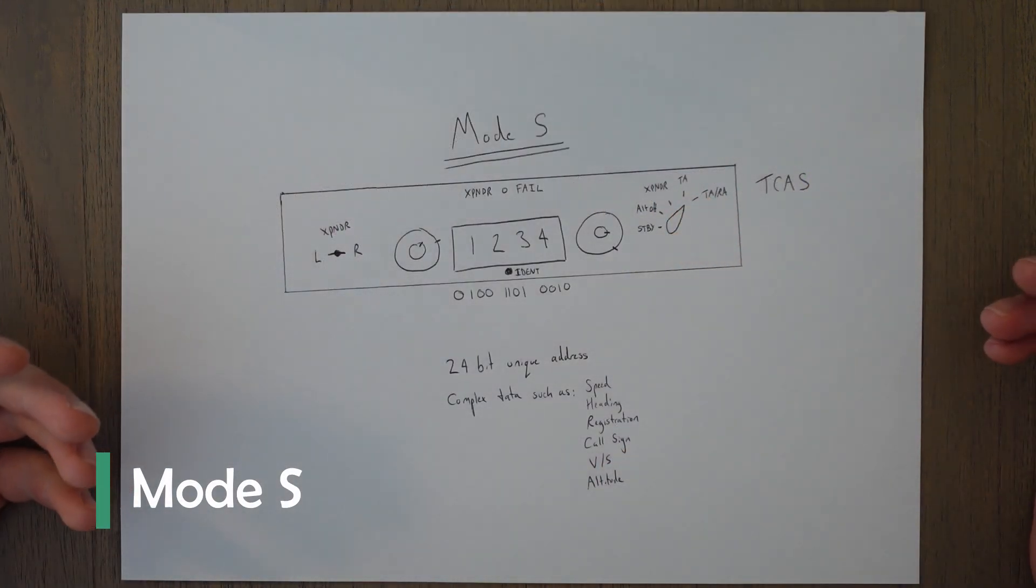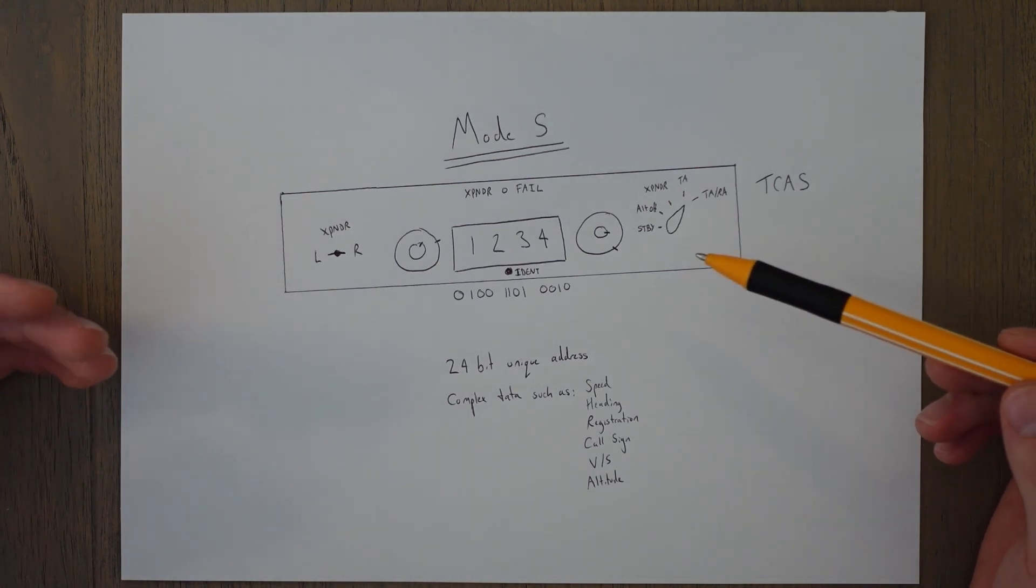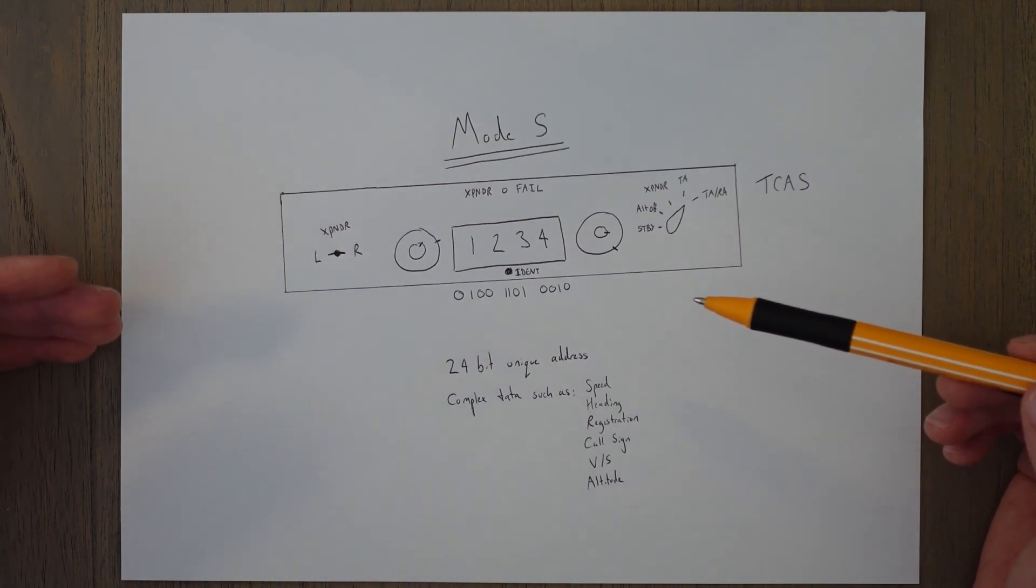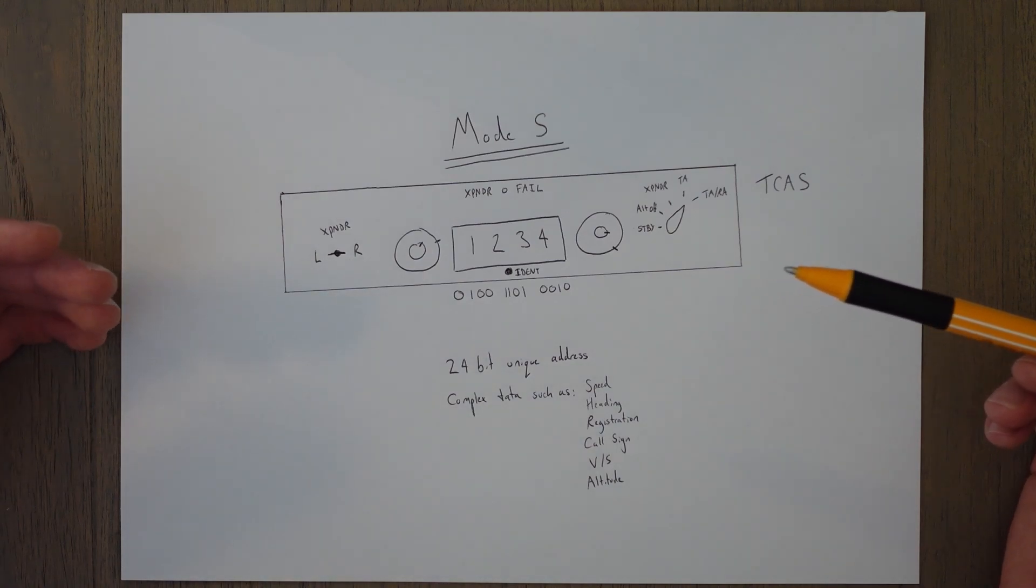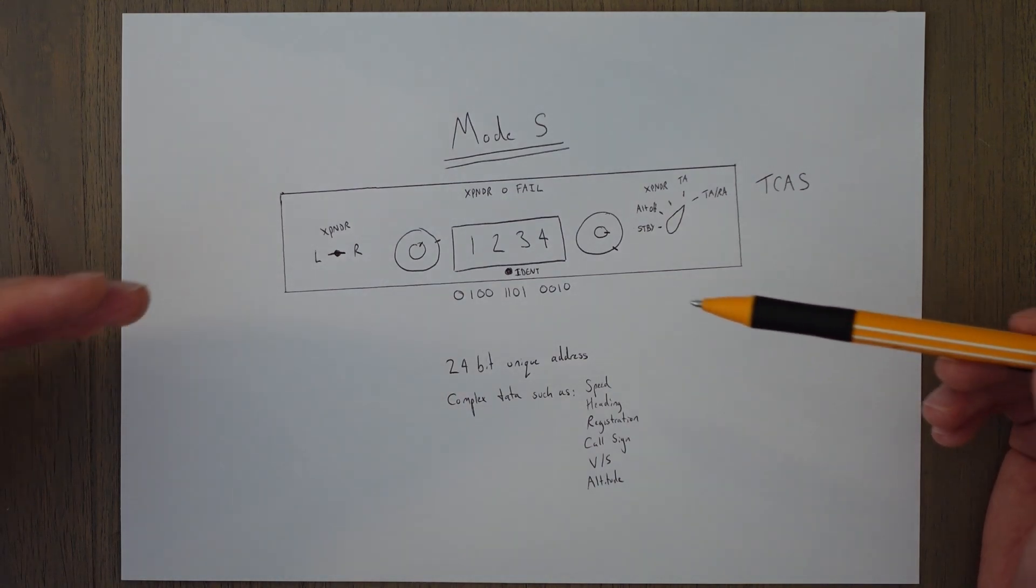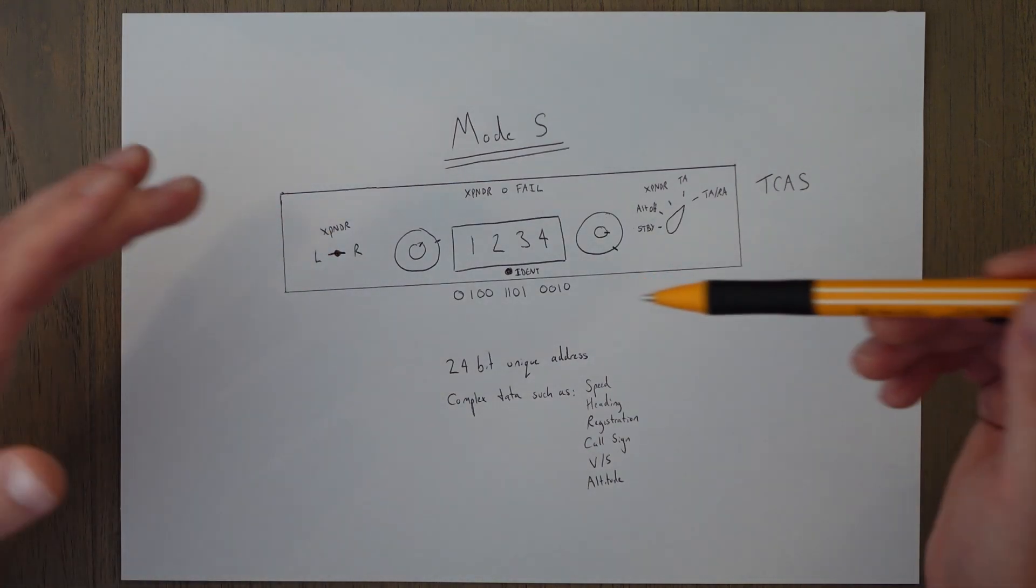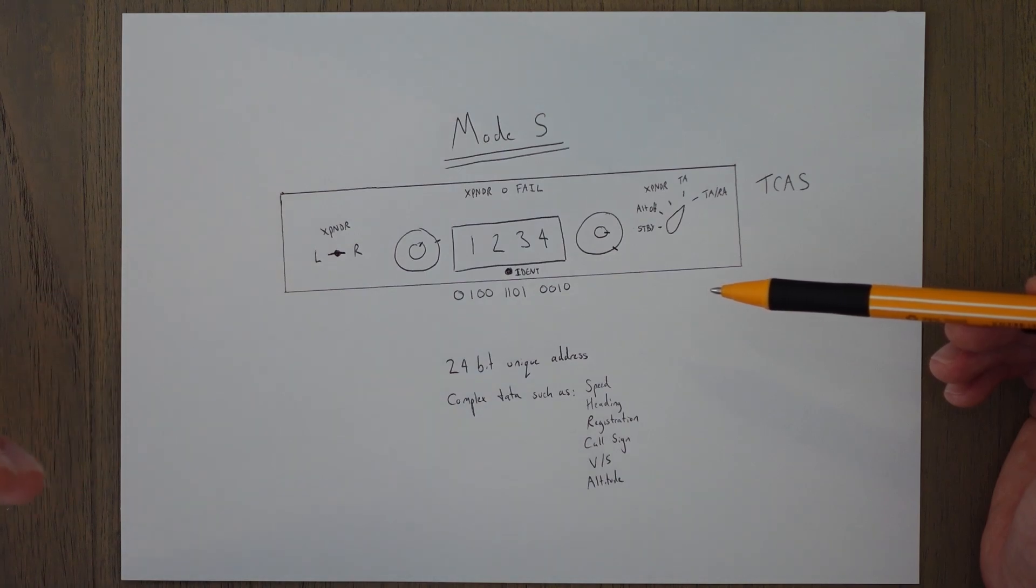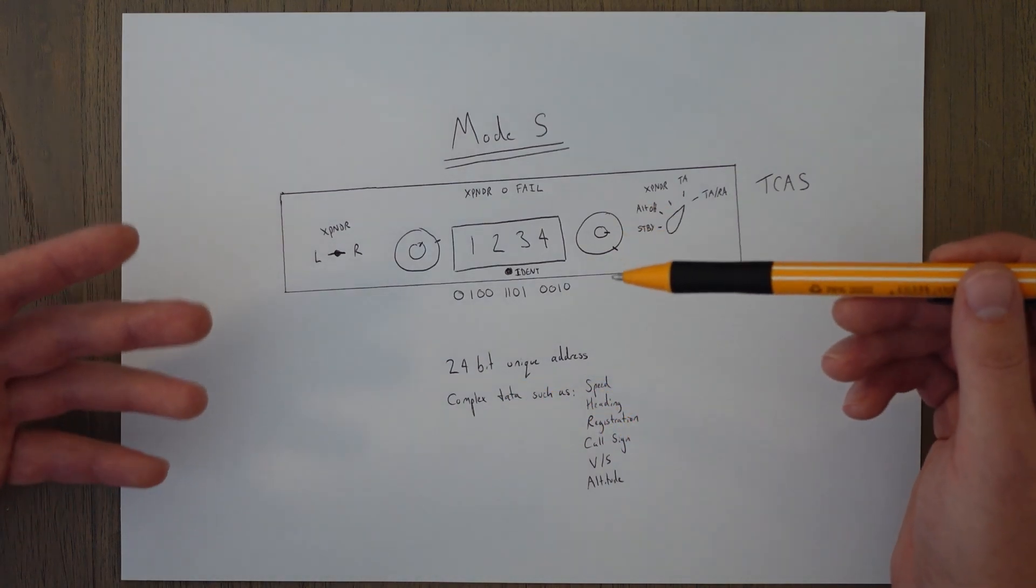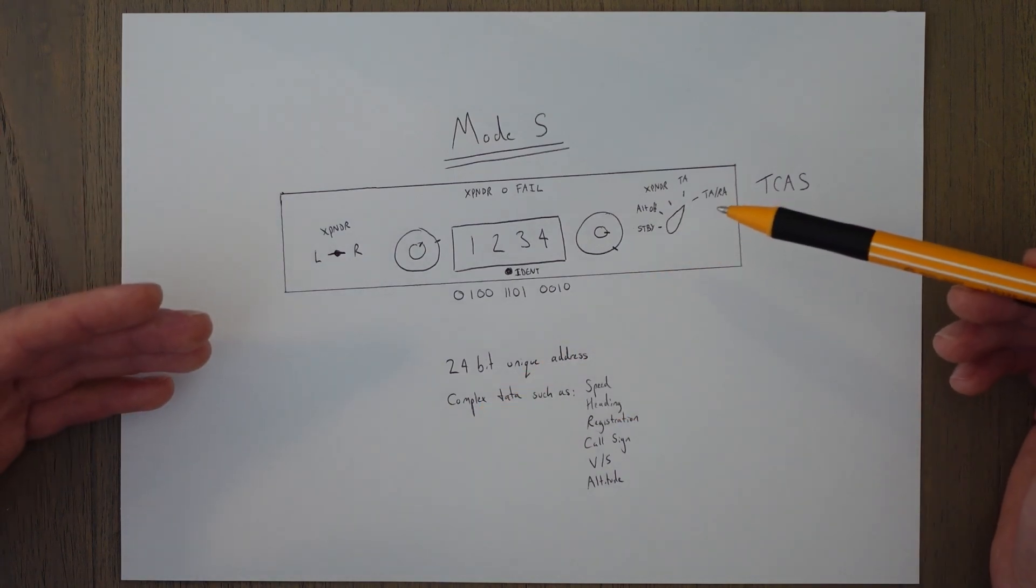Mode S is the third and final type of transponder, and they're more complicated and have a lot more functionality. These types of transponders have a unique 24-bit address. This means that instead of the normal 4096 available codes, there's over 16 million codes. This code is hardwired into the transponder unit and cannot be changed by the pilots. This allows for selective interrogations to be sent to specific aircraft. These transponders also store loads of data and parameters about the aircraft which they can then reply to specific requests from the air traffic controllers and from those radar systems by using a unique code and very specific pulses of information.